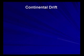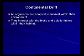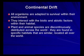Continental drift refers to where all organisms are adapted to survival within the environment - they adapted to the environment and interact with the biotic and abiotic factors within the habitat. Plant and animal species are discontinuously distributed across the world; they are found in specific, similar habitats located all over the world. Discontinuous means it doesn't continue - if we find a certain species in South Africa, it doesn't mean it's going to be found throughout Africa or flow on into Europe.